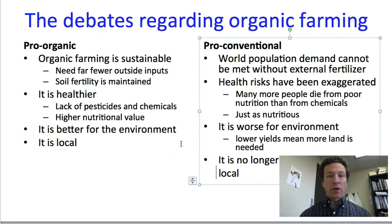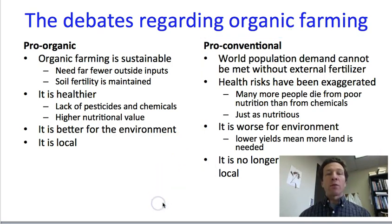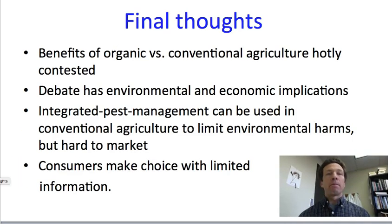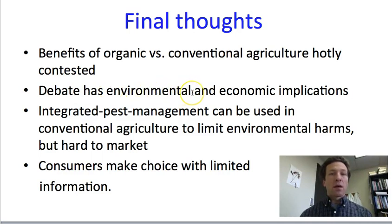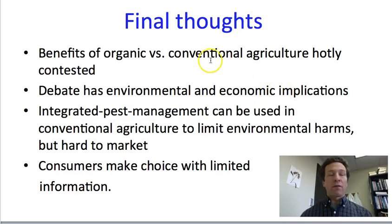These debates I'm not going to try to resolve, but I will provide some additional reading that will help you come up with your own opinion. The benefits of organic and conventional agriculture are hotly contested, with both environmental and economic implications. Whichever is worse, they're a little bit different from each other, and this has huge economic implications for the companies that own organic farms versus those who own conventional farms, and similarly the stores that sell a lot of organic produce compared to those that sell more conventional produce.